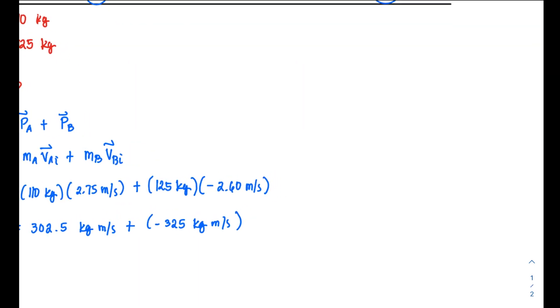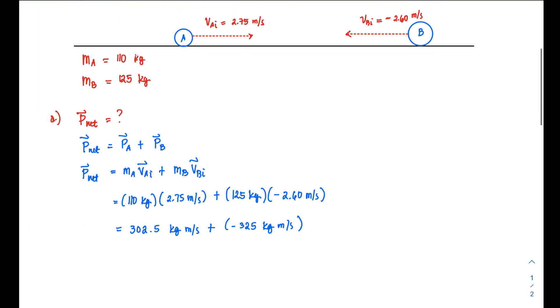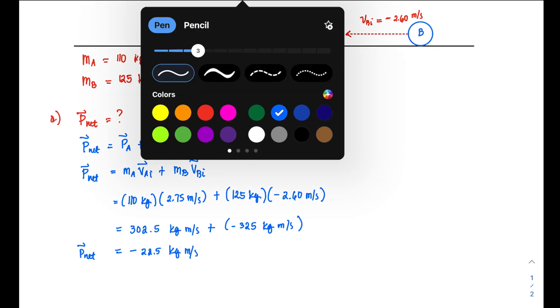Notice the second term has a negative sign. If you add them up, the second term (which is negative) is larger, so you'd expect the net momentum to be negative. The result is -22.5 kg⋅m/s. That is the net momentum.